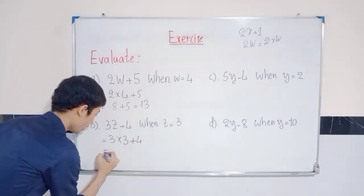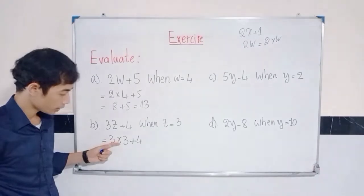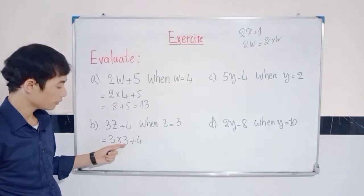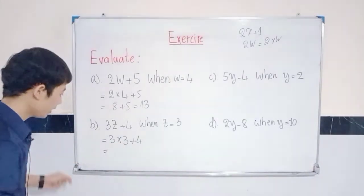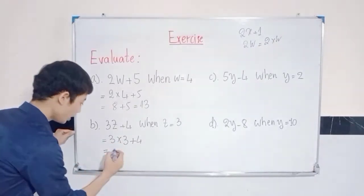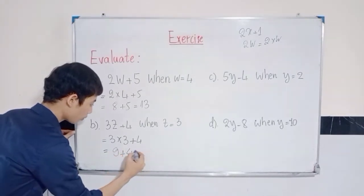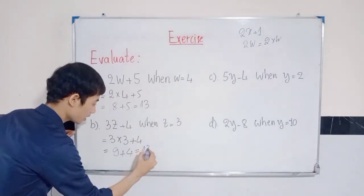We have multiplication and addition. You need to do multiplication before adding. So, 3 times 3 is 9. 9 plus 4 is equal to 13. Finish letter B.